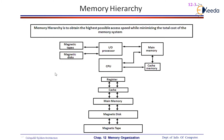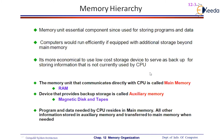The CPU treats all peripheral devices — such as keyboard, mouse, or any other peripheral — and the secondary memory, that is the hard disk, one and the same. Devices that provide backup storage are called auxiliary memory. The programs and data needed by the CPU reside in main memory, while all other information is stored in auxiliary memory, that is, secondary memory.